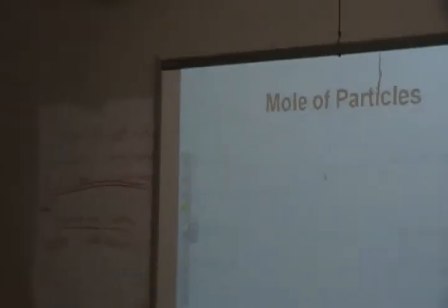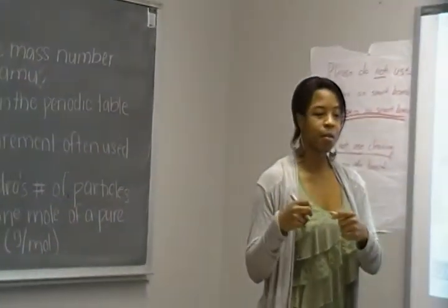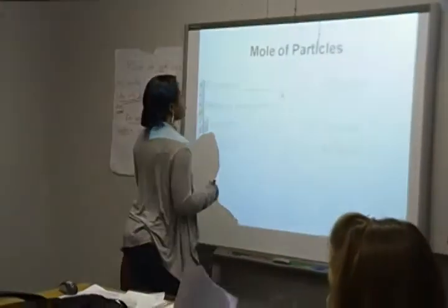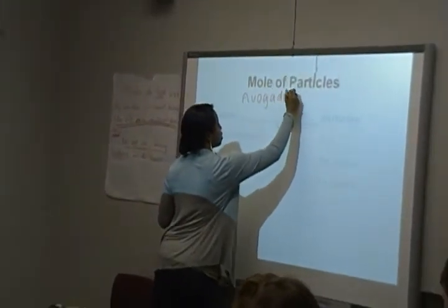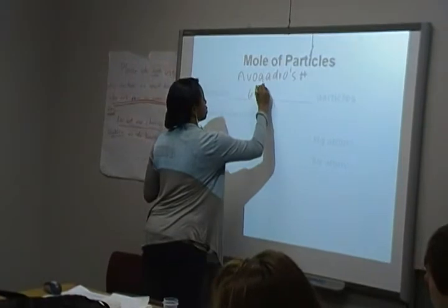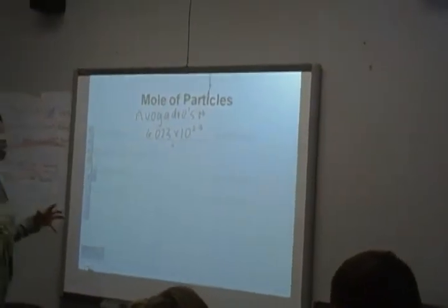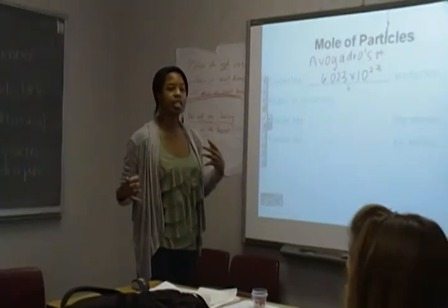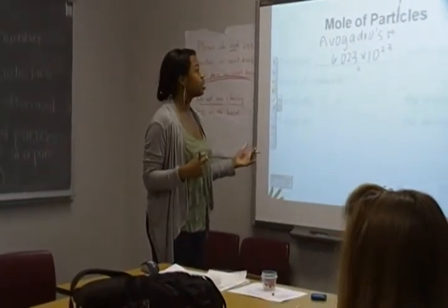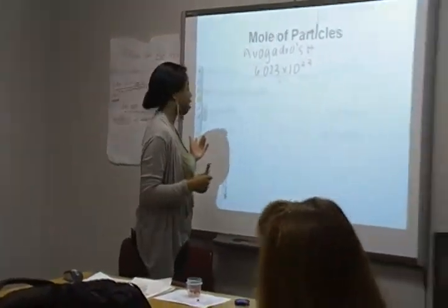Understanding moles a little bit better: what a mole is, is Avogadro's number. One mole is equal to Avogadro's number of particles. You can fill this in on your PowerPoint handouts as we go along. Avogadro's number is actually equal to 6.023 times 10 to the positive 23rd. So basically, a mole is just a unit of measurement, just like centimeters or inches. Instead of saying you have 6.023 times 10 to the 23rd particles, you'd just say you have 1 mole.